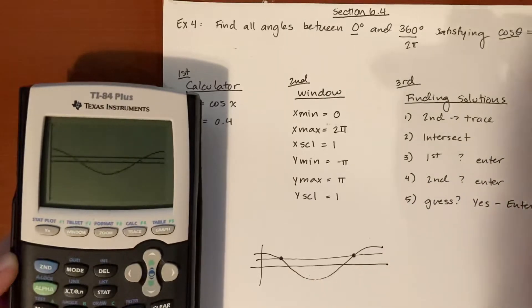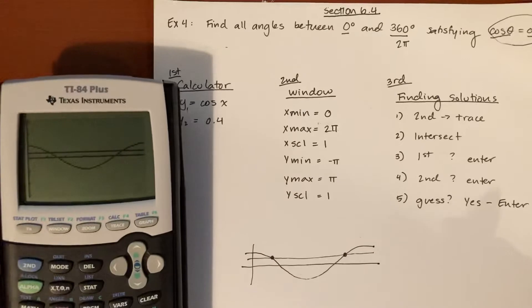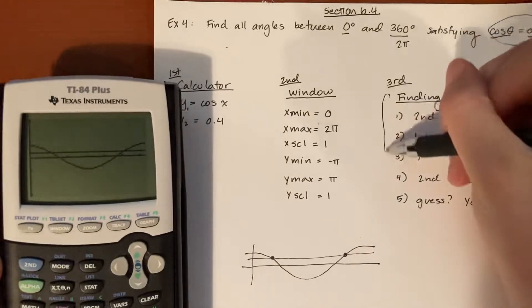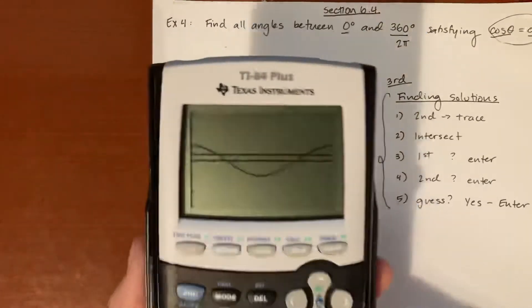We have our cosine value and then we have our 0.4. Now recall, we want to figure out these two intersection points because that is when these two are equal to each other. How do we find that? Well, that is what I mentioned for the steps for finding that in the video.